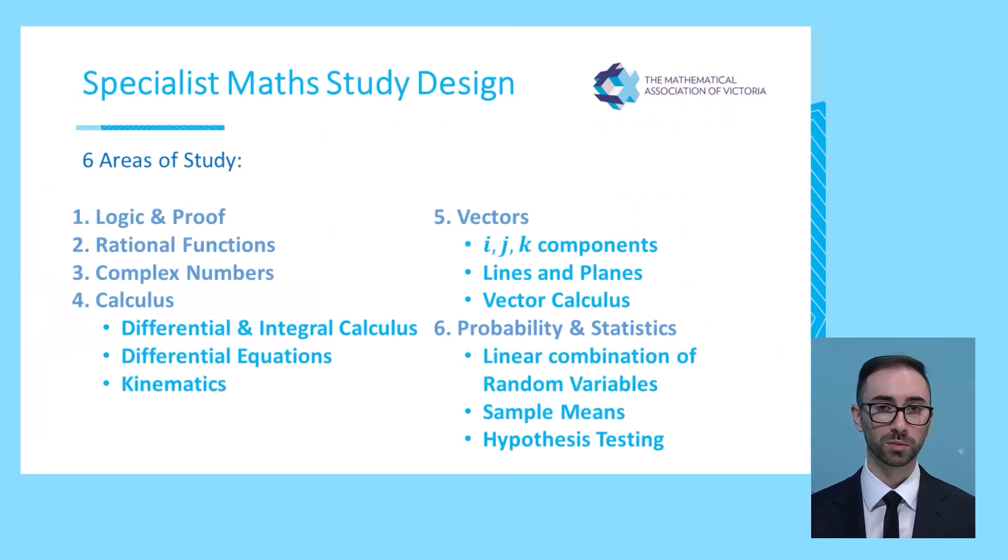Within the study design for Specialist Mathematics, there are six areas of study which will feature across both exams. Logic and proof, rational functions, complex numbers, calculus, which will involve differential and integral calculus, differential equations, and kinematics. We'll also see vectors, including our familiar I, J, K components, lines and planes, which is new to the course, and vector calculus. And then finally, probability and statistics, which will complement methods, which includes linear combinations of random variables, sample means, and hypothesis testing.